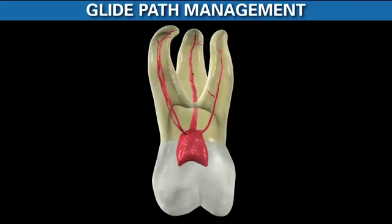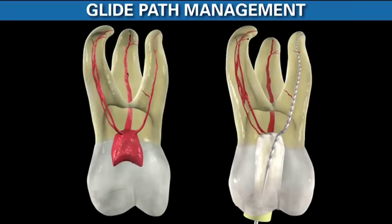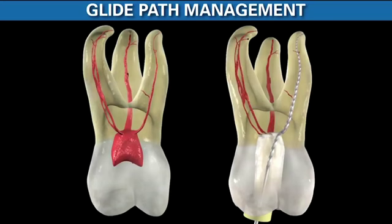Many colleagues use a viscous chelator like Glide, ProLube, or RC Prep, and tediously work the 10 file — sometimes dropping to an 8 or even a 06 to reach length. But when we do this, the rate of taper of the file is more or less the rate of taper of the canal, there's virtually no irrigant in the system, and debris frequently gets pushed into the lateral anatomy. These canals are being instrumented by stainless steel files — can we really pre-curve a file and pass it through canyons of restrictive dentin?